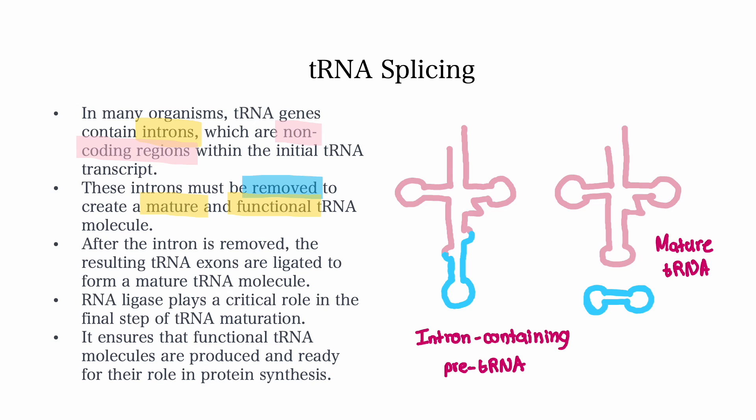After the introns are removed, the resulting tRNA exons are ligated to form a mature tRNA molecule. RNA ligase plays a critical role in the final step of tRNA maturation. It ensures that functional tRNA molecules are produced and ready for their role in protein synthesis.